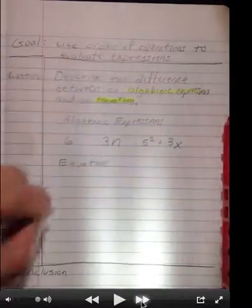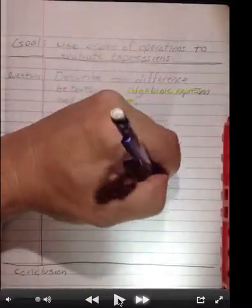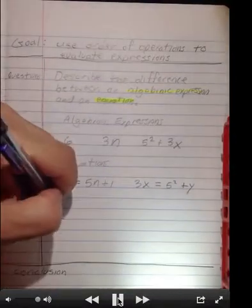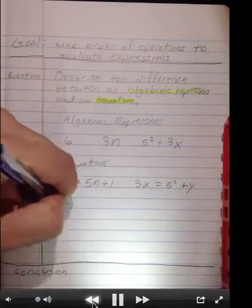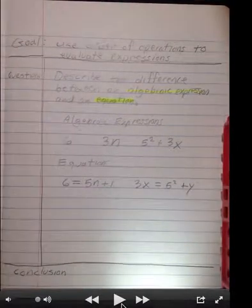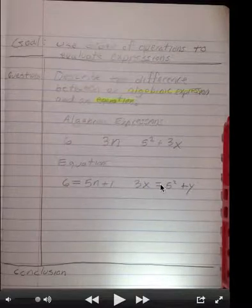Here are some examples of equations. 6 equals 5n plus 1, 3x equals 5 squared plus y. The difference between the algebraic expressions and the equations is the equal sign. Notice that there's an equal sign right here, there's an equal sign right here, but up here there are no equal signs.